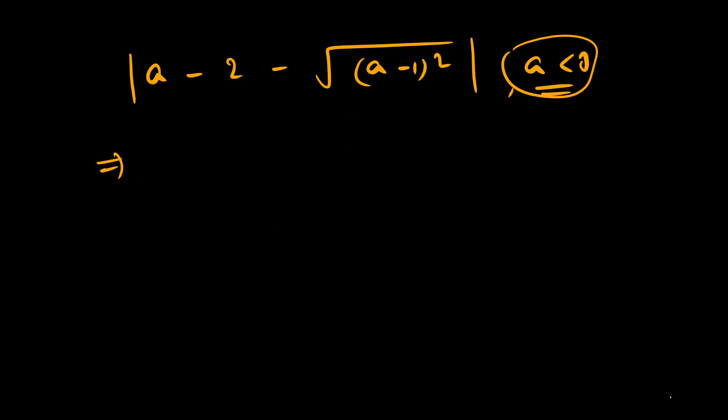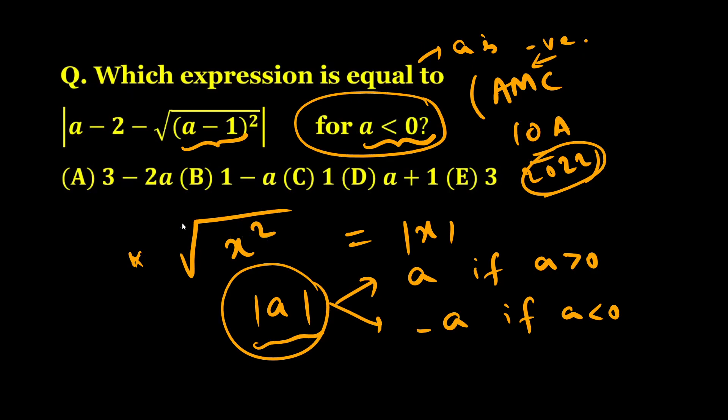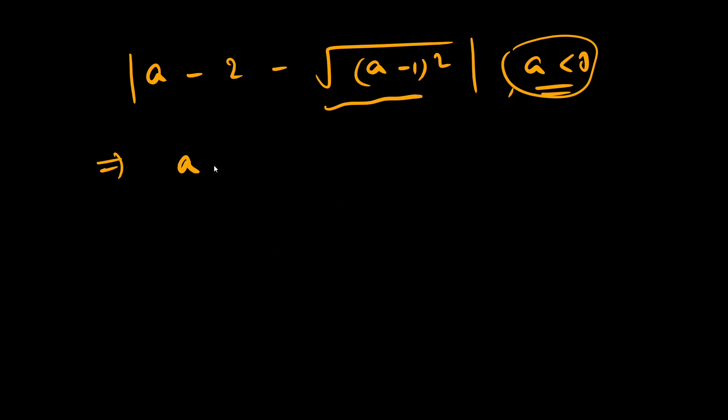Using the definition of √(x²), I can open this part, so this becomes |a - 2 - |a-1||. I can get rid of the square root and the square.